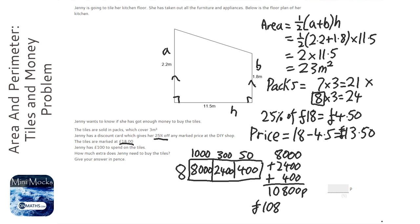Now, it says that Jenny has £100. How much extra does Jenny need to buy the tiles, and give your answer in pence? So it's £108 it's going to cost. She's got £100, so I could write that down for the examiner. Now, £108 take away £100, which equals £8, which is 800 pence, so the answer is 800 pence.